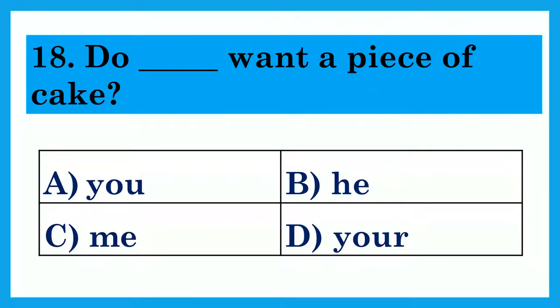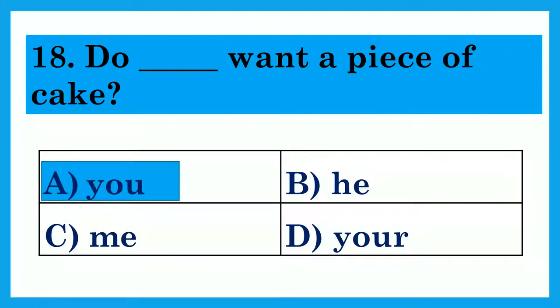Do dash want a piece of cake? Option A: You. Option B: He. Option C: Me. Option D: Your. The answer is Option A: You — Do you want a piece of cake?